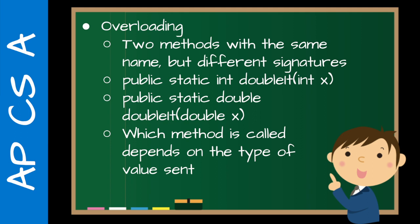For example, public static int doubleIt, public static double doubleIt, double x. So you can see here, we have an int as our signature, and here we have a double. So which method is called depends on the type of value sent. So if I send an integer, it's going to call this method. If I send a double, it's going to call this method. You can do a lot of interesting stuff with that, especially with constructors when you get to that later.